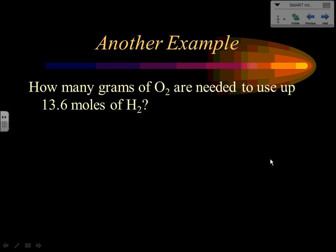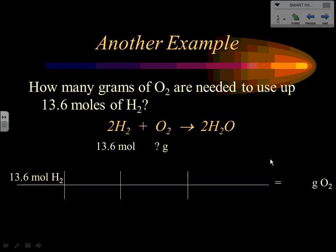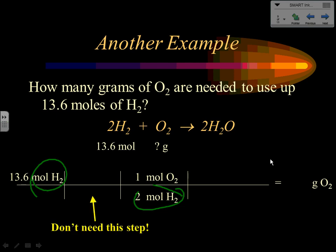Another example: how many grams of oxygen do I need to use up 13.6 moles of hydrogen? Set it up as a three-step problem with given and target, then go to the middle step. Hydrogen goes on the bottom, oxygen on top, and moles by both. From the balanced equation: 2 moles of hydrogen for every 1 mole of oxygen. Since I'm already starting in moles of hydrogen, I do not need step one.